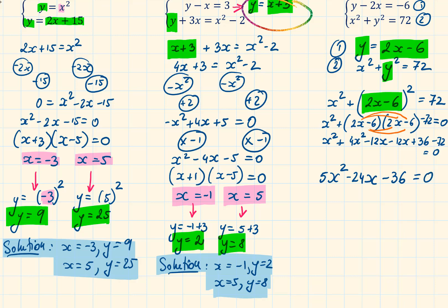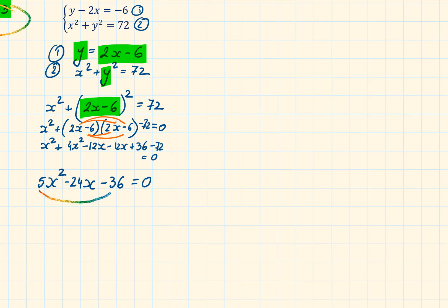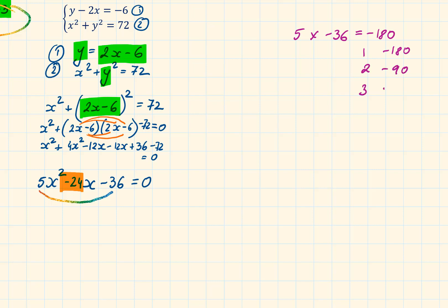To solve this quadratic equation we can choose between three methods: the quadratic formula, factorizing if possible, or completing the square. I'm going to try to factorize. First, 5 times minus 36 equals minus 180. We need two numbers that multiply to minus 180 and add to minus 24. Since they must add to minus 24, the larger of the factor pair will be negative. Checking pairs: 1 and minus 180, 2 and minus 90, 3 and minus 60, 4 and minus 45, 5 and minus 36, 6 and minus 30. We stop at 6 and minus 30 because 6 plus minus 30 equals minus 24.